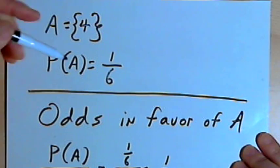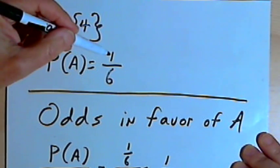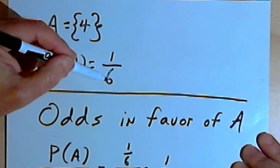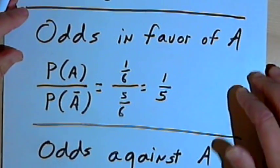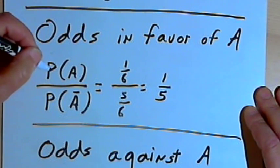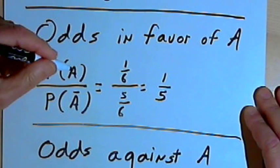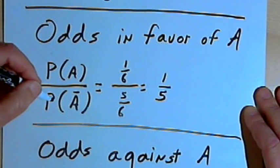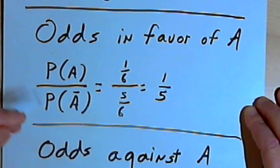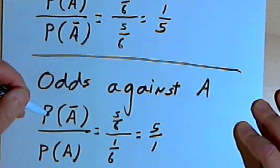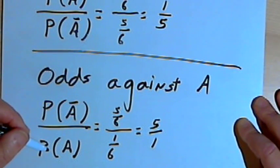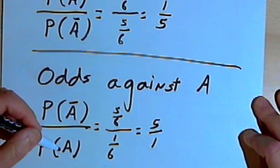So to review this whole thing, probability is the number of ways that an event can happen divided by the total number of outcomes. Odds in favor are calculated by taking the probability that an event will occur divided by the probability that it won't occur. Odds against are the reciprocal of that. We take the probability of an event not happening, and we divide it by the probability that the event does happen.